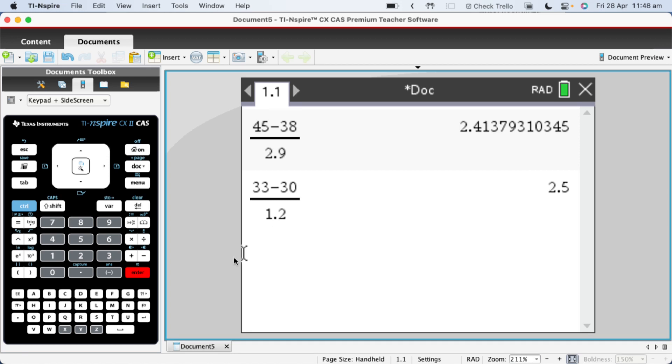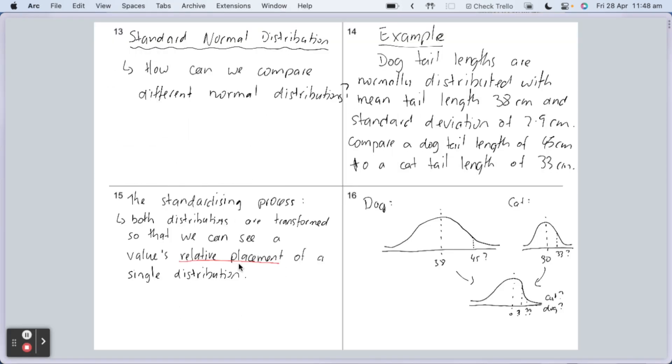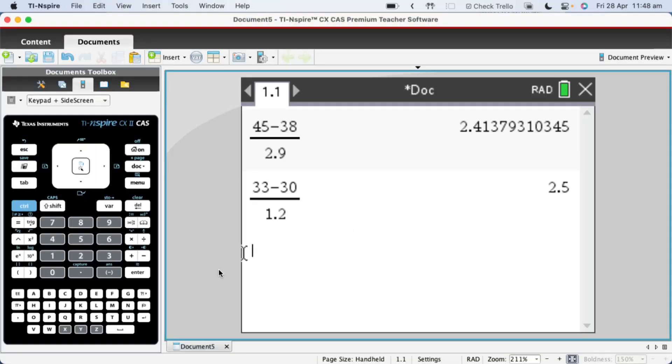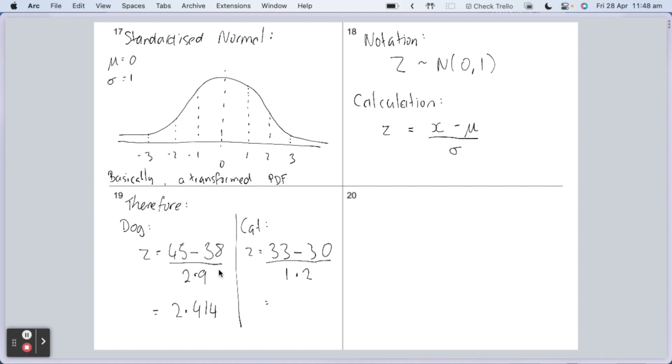33 minus 30 all over 1.2. The 33 is the tail length of the cat that we were asked to compare. So the 45 and the 33 are the given points or the given x points, the given length. And so they're what I substituted in for x here in the formula. So they're the given points. Am I making sense? And the rest are just the same. So the z value for the dog is 2.414. The z value for the cat is 2.5. And so I would say that therefore the cat's tail is relatively longer, assuming I've done my calculations correct there.